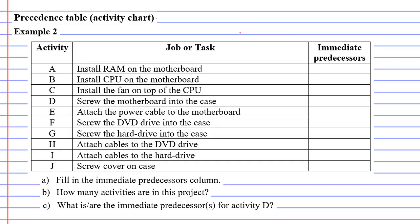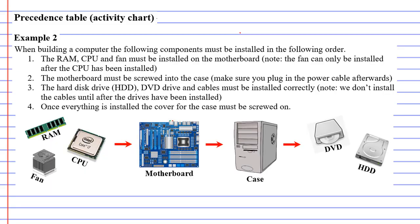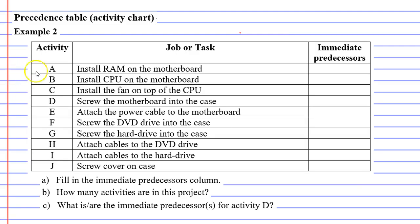So let's look at our precedence table. We've got a list of all our activities. Question A wants us to fill in the immediate predecessors column. The first thing that needs to happen is that the RAM and the CPU need to be installed on the motherboard. It doesn't matter which one you install first. Activities A and B involve installing the RAM and the CPU, and because they are installed first, they do not have any immediate predecessors — so we put a dash there.